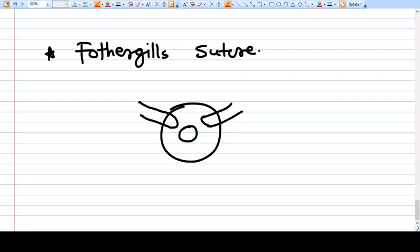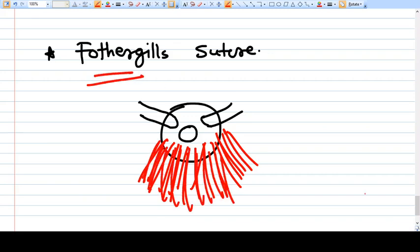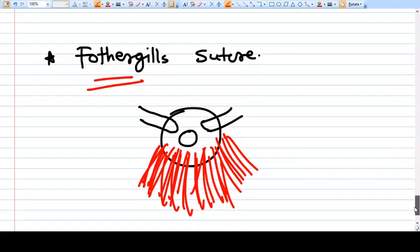What is Fothergill's suture? Nothing. We just repair or we just attach the posterior vaginal wall to the posterior lip of the remaining cervix. This is Fothergill's suture. So very basically Stumpdorf suture is anterior suture, Fothergill's is posterior suture.